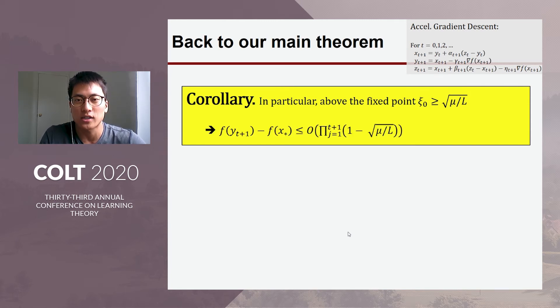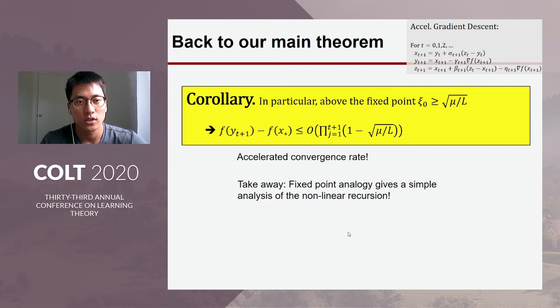So, based on this fixed point analysis, we get this following corollary. For fixed initial point c_0, we get this accelerated convergence rate. So, we recovered Nesterov's somewhat complicated analysis based on a very naive strategy. So, main takeaway from this fixed point analysis is that we can study this non-linear recursive relation based on very simple fixed point convergence analogy.